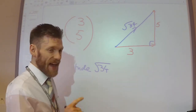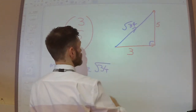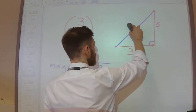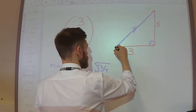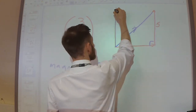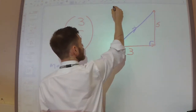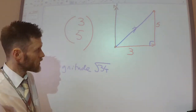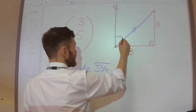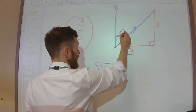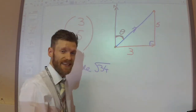Next, the bearing. What bearing does this vector act at? Let's remember what a bearing is — it's an angle measured clockwise from north. I started here, so I'm going to draw a north line here, and I want to work out what is that angle. That's the bearing at which this vector is acting.